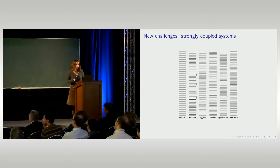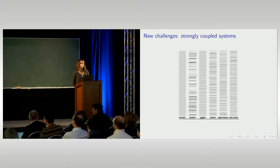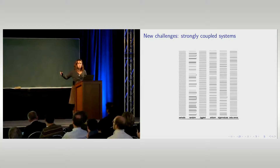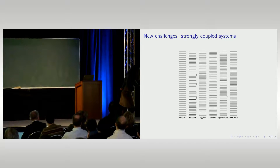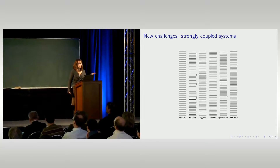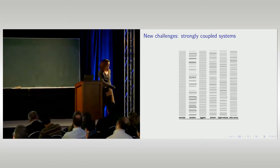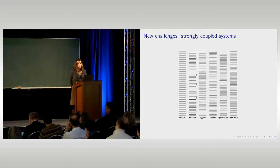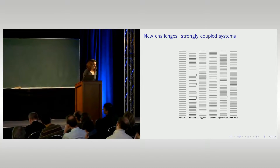Now I come to what I want to discuss in this talk. One of the new challenges in probability theory is to understand strongly coupled systems. What I've told you about is independent systems, which are kind of trivial — represented by the row labeled 'random.' This row represents independent trials: imagine throwing coins, putting a black line for success and nothing otherwise, getting a random point process that is very randomly distributed. What we would be interested in is studying more ordered systems, which are the eigenvalues of random matrices.